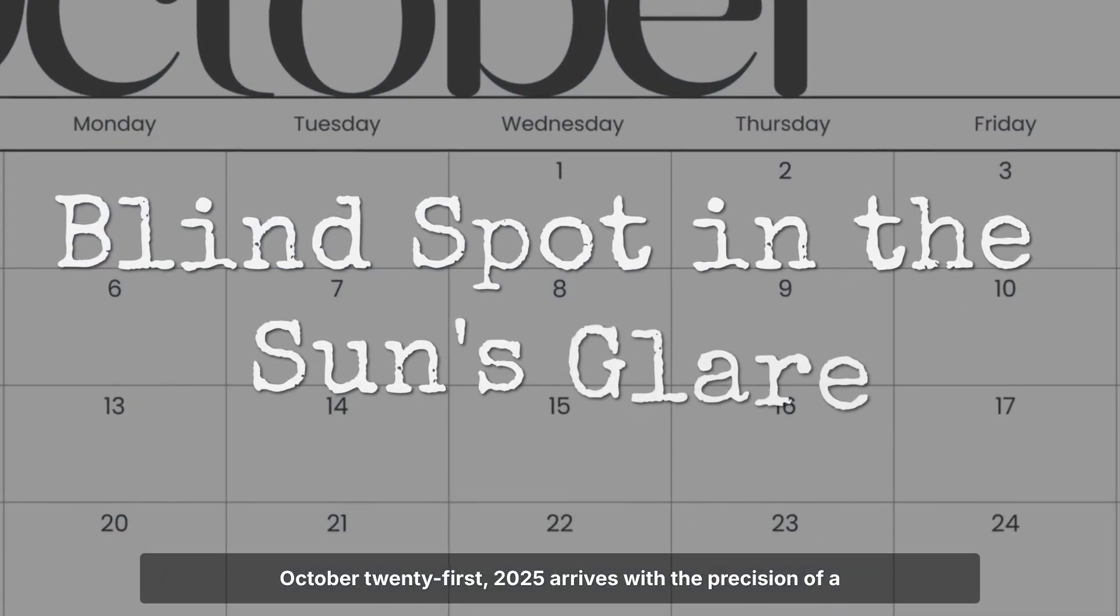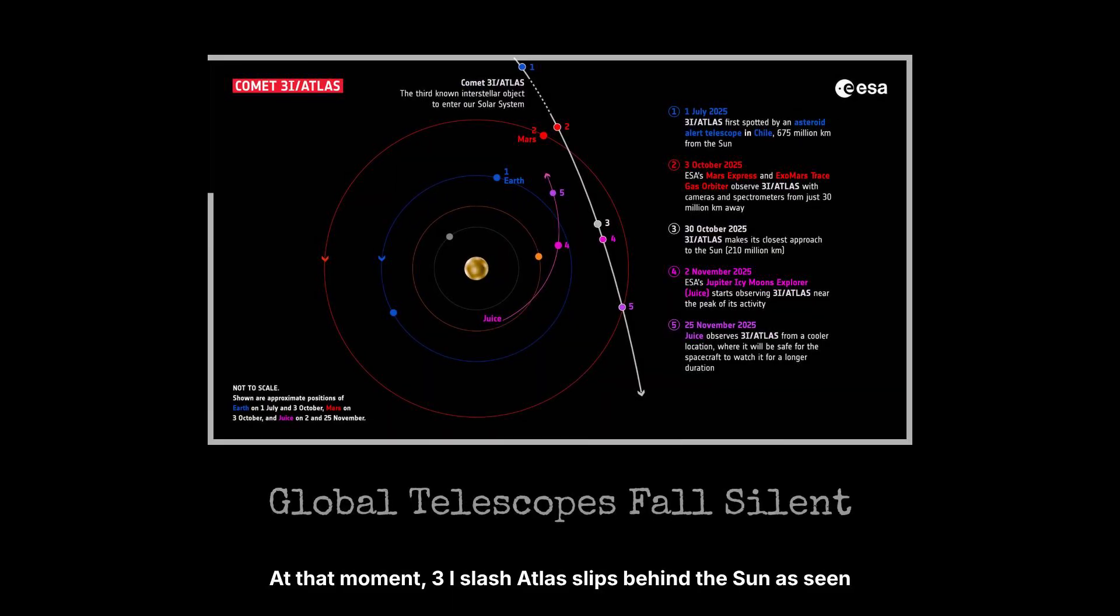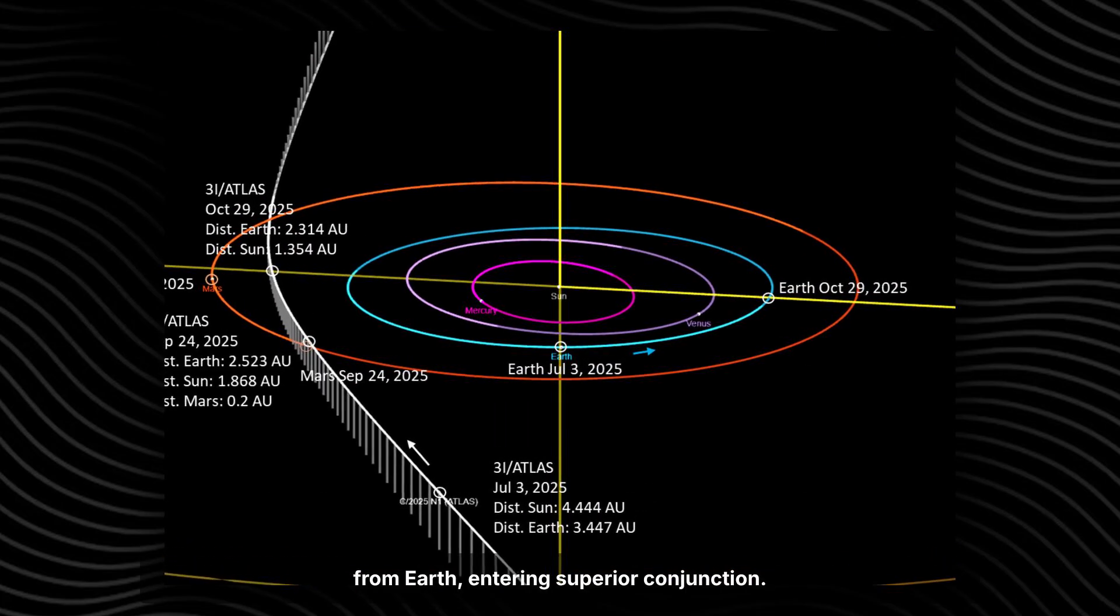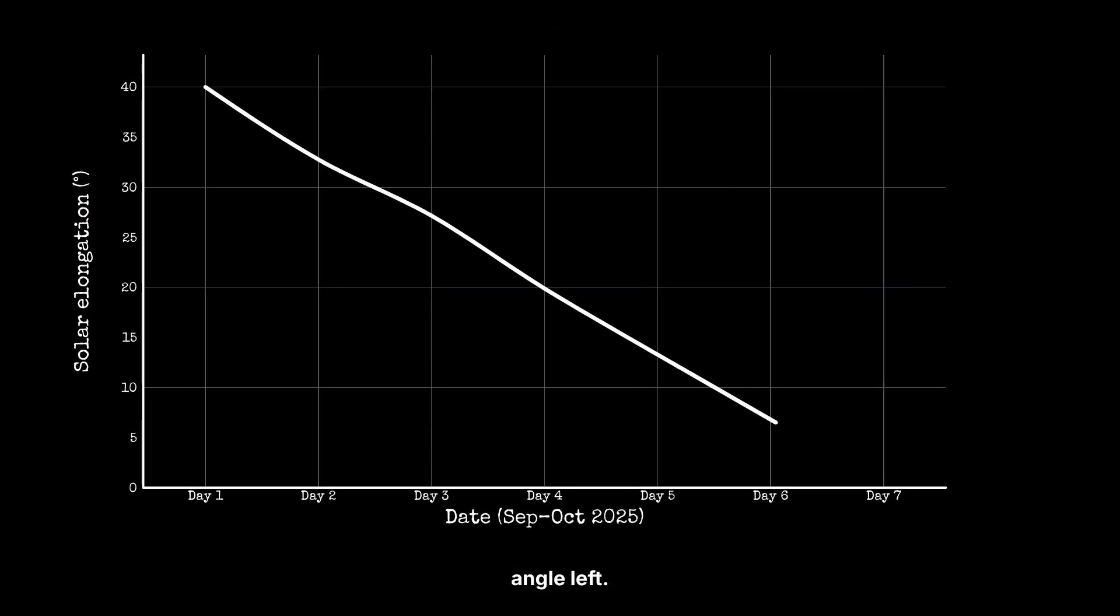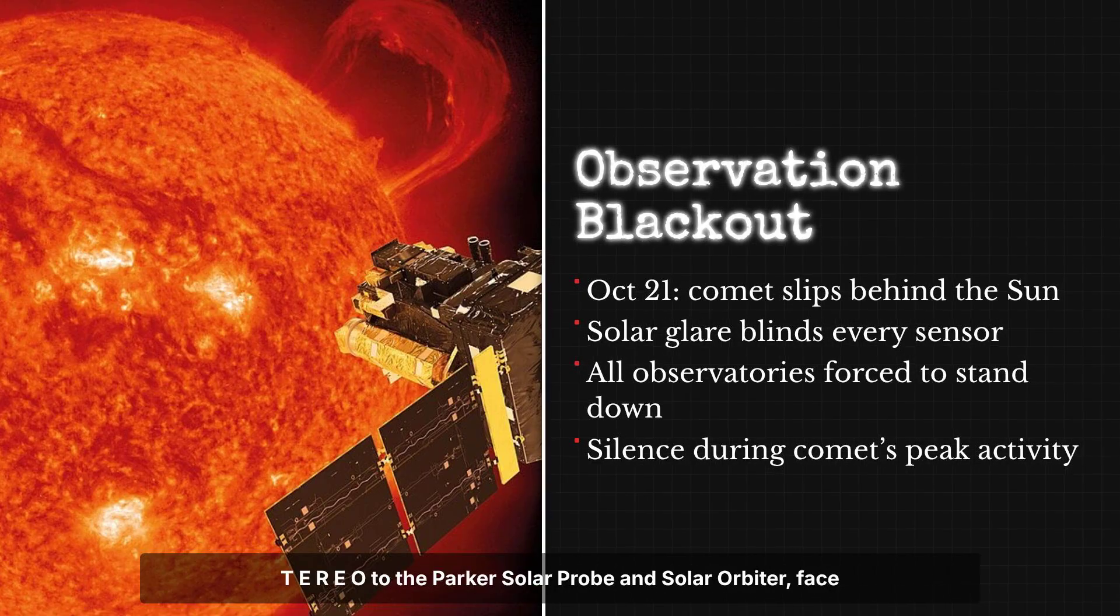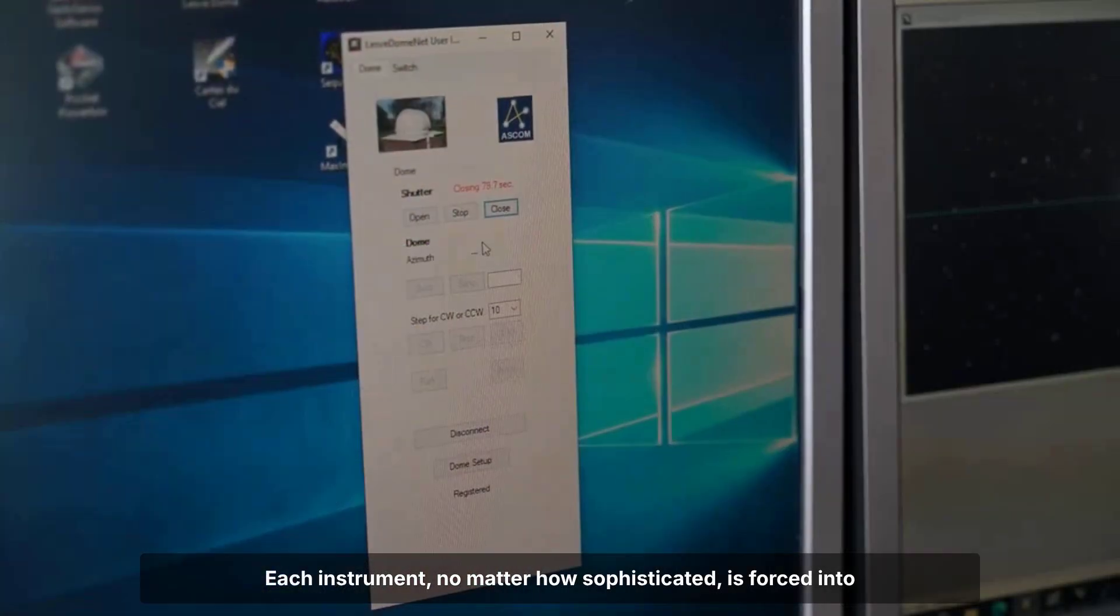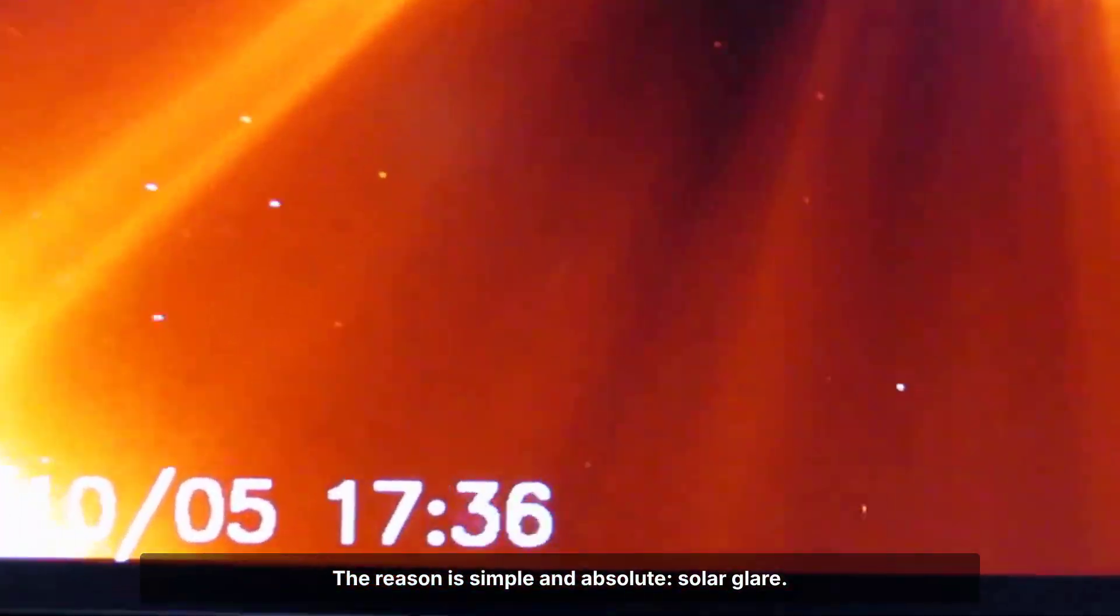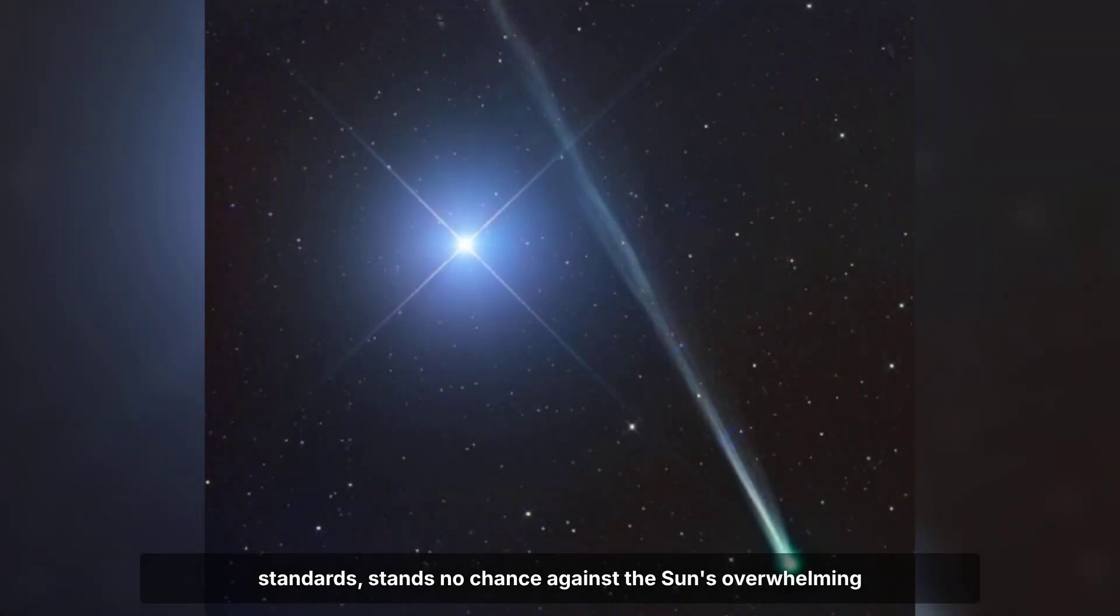October 21st, 2025, arrives with the precision of a deadline no one can negotiate. At that moment, 3I-slash-Atlas slips behind the sun as seen from Earth, entering superior conjunction. Solar elongation shrinks to nearly zero. There's no safe angle left. The world's most advanced observatories, from SOHO and STEREO to the Parker Solar Probe and Solar Orbiter, face the same hard limit. Each instrument, no matter how sophisticated, is forced into retreat. The reason is simple and absolute: solar glare.